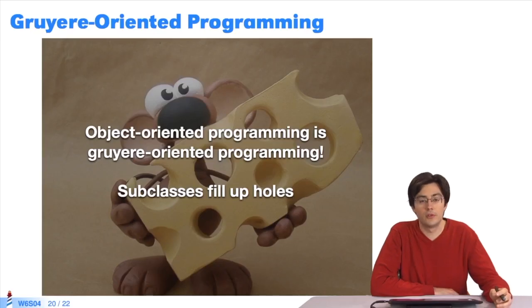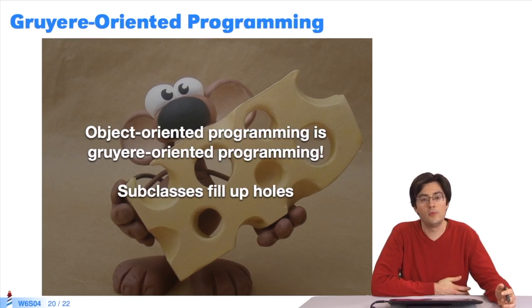This is called gruyere-oriented programming. An object-oriented program, a method, contains holes called hooks, which can be filled with subclasses.